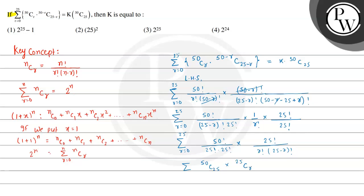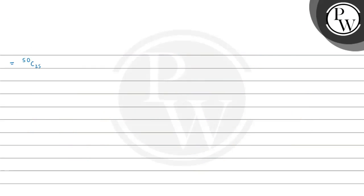We can now write this as 50C25 multiplied by summation of 25Cr, where r is varying from 0 to 25. Since 50C25 is a constant value, we can take it outside the summation. So we get 50C25 multiplied by summation of 25Cr where r is varying from 0 to 25. Using the property that summation of nCr from 0 to n equals 2 to the power n, here nCr is replaced by 25Cr, so its value will be 2 to the power 25.